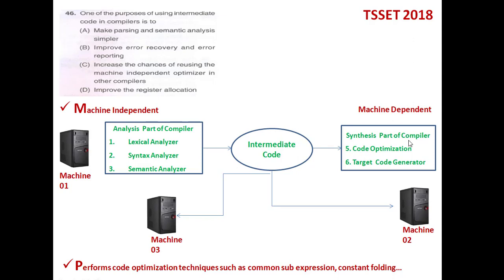The synthesis part of a compiler contains the last two phases: code optimization and target code generation. In between the analysis and synthesis parts, we have the IR code, also called the intermediate code. The analysis part takes the source code as input and generates the IR code, and this IR code is then input to the synthesis part, which generates the target code for the machine.